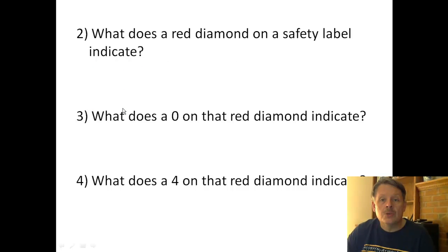What does a red diamond on a safety label indicate? Well, that's pretty easy—that one's fire, and it gives you the indication of how prone this particular chemical is to fire. A zero on the red diamond would indicate that it is not flammable, it's not going to burn. An example of something like this might be water.